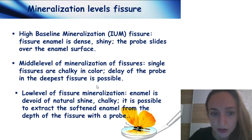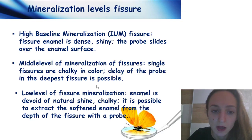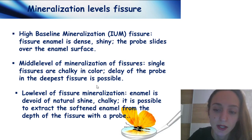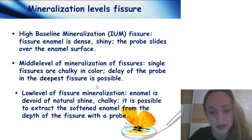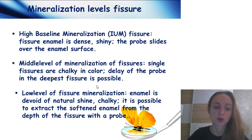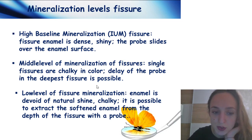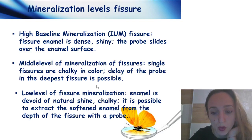High mineralization fissure: reduced fissure enamel is dense, shiny, and the probe slides over the enamel surface. Middle level of mineralization: single fissures are chalky in color and delay of the probe in the deepest fissures is possible. Low level of fissure mineralization: enamel is devoid of natural shine, chalky, and it is possible to extract softened enamel from the depth of the fissure with a probe.